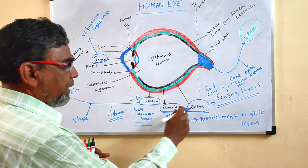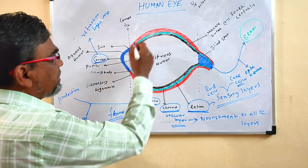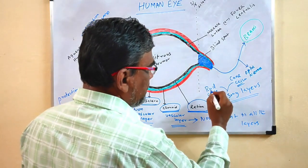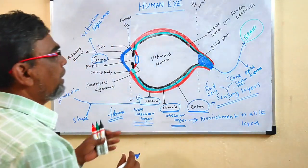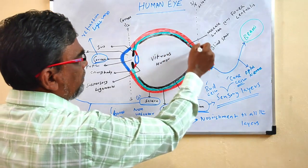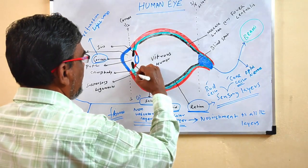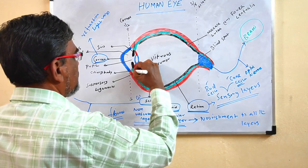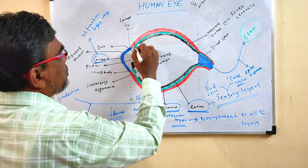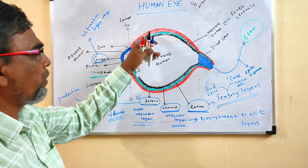Sclera gives protection; choroid gives nourishment; retina is the sensory layer. The choroid, the middle green layer, posteriorly connects to the optic nerve, whereas anteriorly it thickens to form a structure called the ciliary body. The ciliary body is an extension of the choroid. Cornea is the anteriorly extension of sclera.